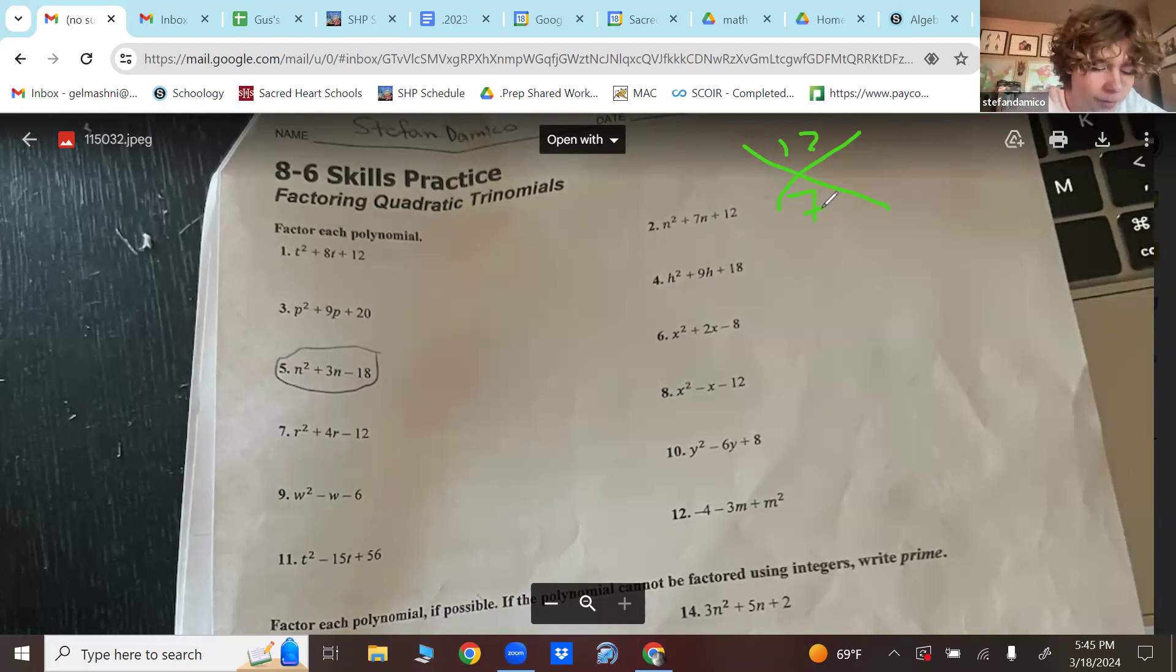Step one. Factor out the GCF if possible. Step two. Put the trinomial into standard form. Step three. Find the product of a times c. Step four. Find two integers of the product of a times c that add up to b. It's the same thing. I did the same exact thing just now.